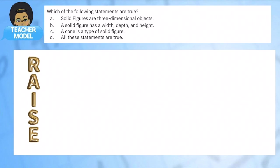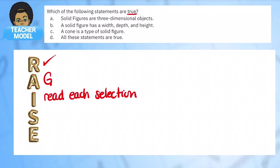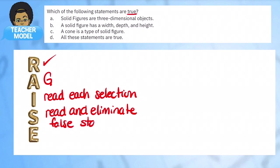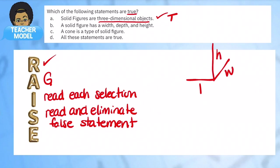Let's do a quick practice problem. We want to know which statement is true. This is a geometry unit and all of our information is in the multiple choice selections, so my strategy is to read and eliminate false statements. The first option: a solid figure is a three-dimensional object — that is absolutely true. A solid figure has a length, a width, and a height; it takes up space.